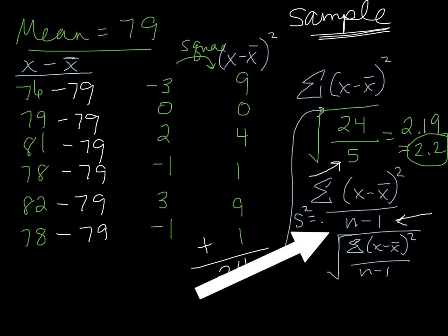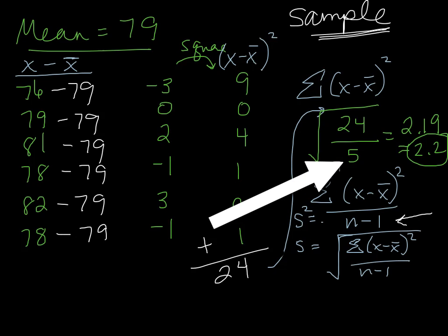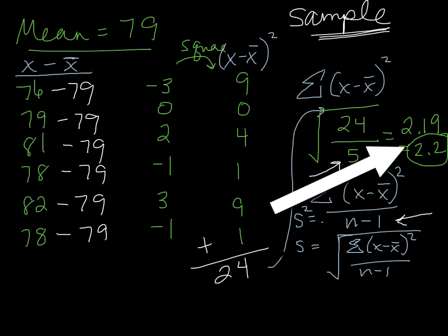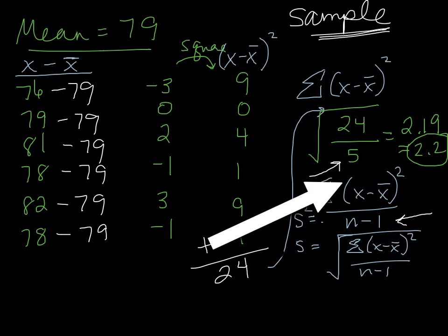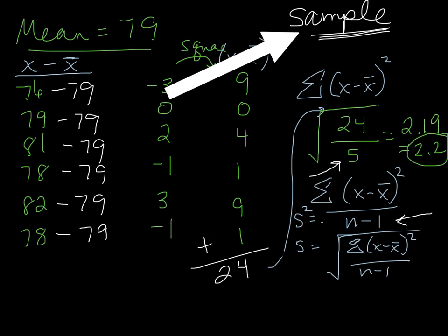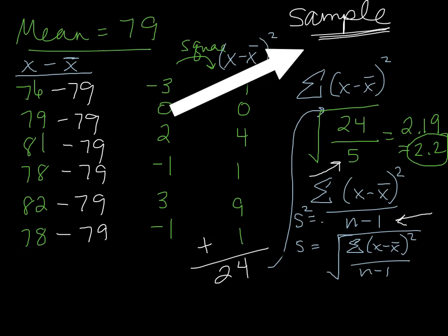So we had to divide by 5 instead of 6 because this was a sample. 24 divided by 5 gave us 4.8, and then we do the square root of that, and you get 2.19, which we rounded to 2.2. If you got 2, it's because you divided by 6, thinking that it was a population instead of a sample.